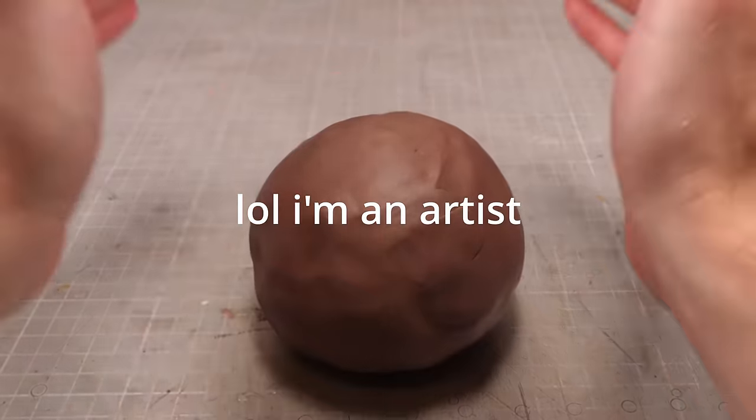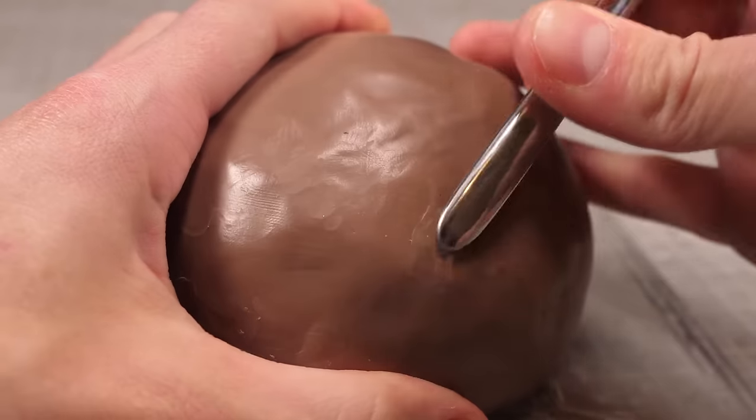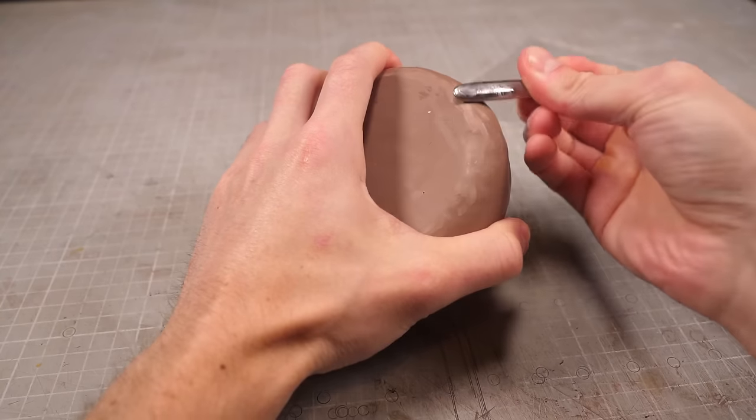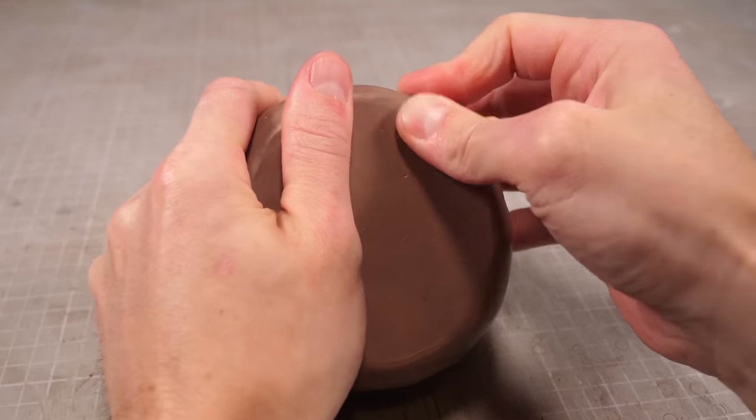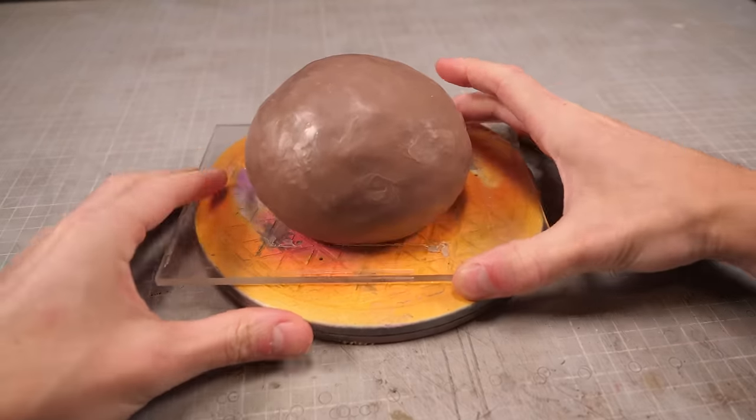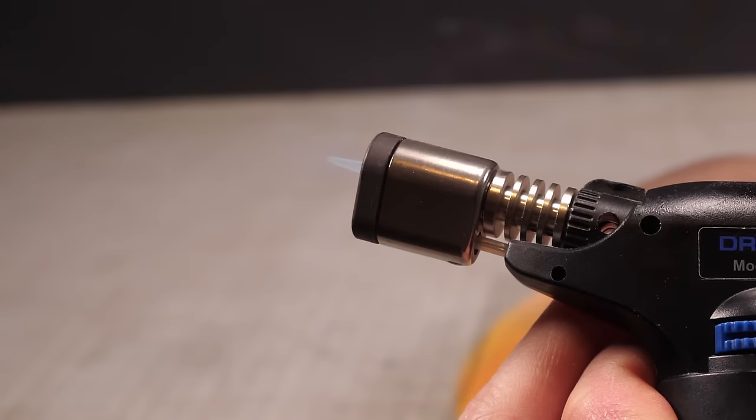As it starts to cool down it'll get harder to shape until it's nearly rock solid at which point I can start to refine the shape and smooth out all the small cracks and seams that would have otherwise been too hard to fix while it was still goopy and droopy. Finally I've got a mostly smooth surface with a few minor imperfections that can be fixed like most things with the application of an open flame.